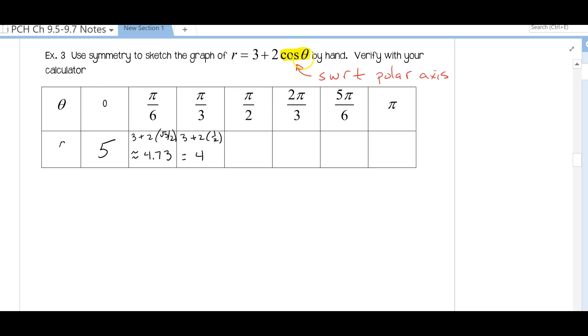When we plug in pi over two, cosine of pi over two is zero, so we're just going to end up with three. For two pi over three we're going to have three plus two times negative a half. Two pi over three is in the second quadrant, so that's going to be three minus one which is two. For five pi over six I'm going to have three plus two times negative root three over two, so that's three minus root three which is going to be about 1.26. Plugging in pi, we have three plus two times negative one. Cosine of pi is negative one, so it's three minus two or one.